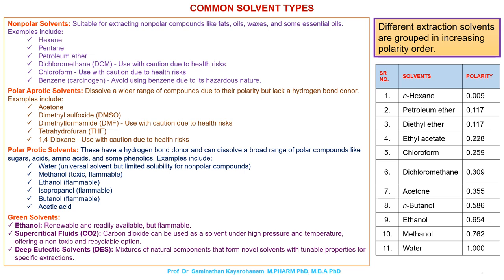Green solvents include ethanol, which is renewable and readily available but flammable. Supercritical fluids such as CO2 can be used as a solvent under high pressure and temperature, offering a non-toxic and recyclable option. Deep eutectic solvents (DES) are mixtures of natural components that form novel solvents with tunable properties for specific extractions.